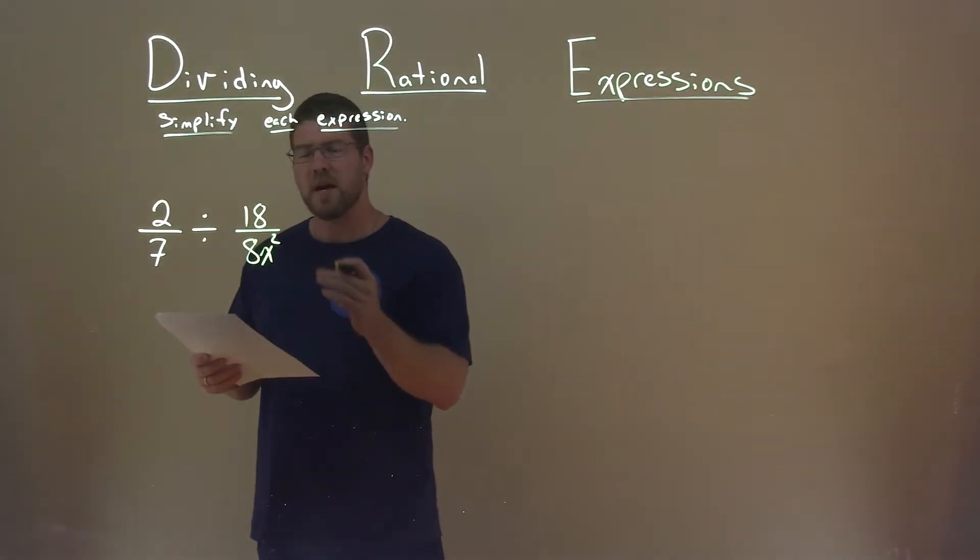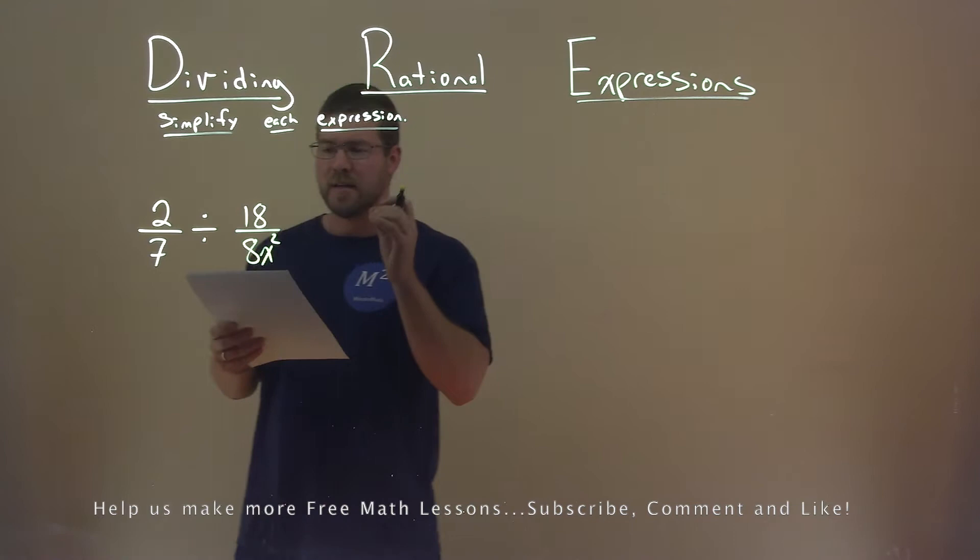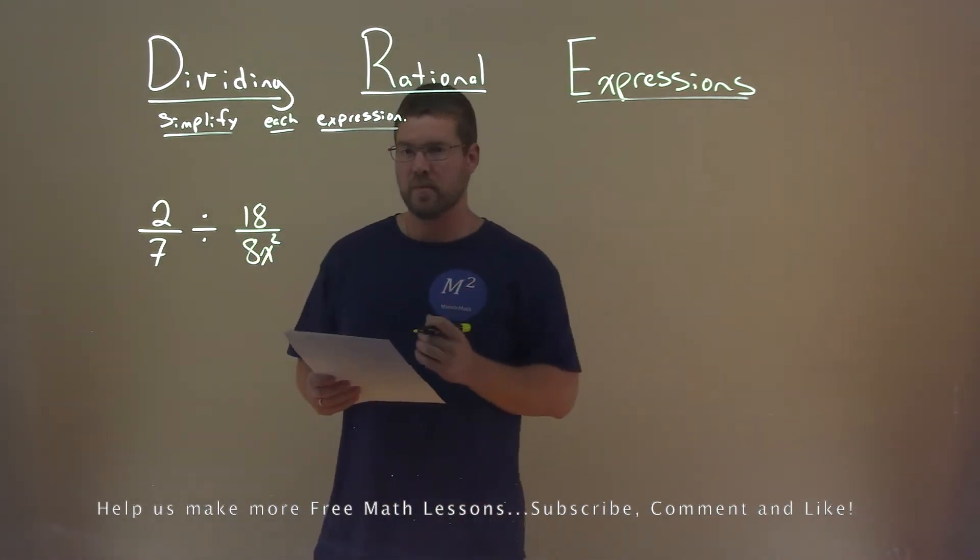We're given this expression right here, 2 sevenths divided by 18 over 8x squared, and we need to simplify this expression.